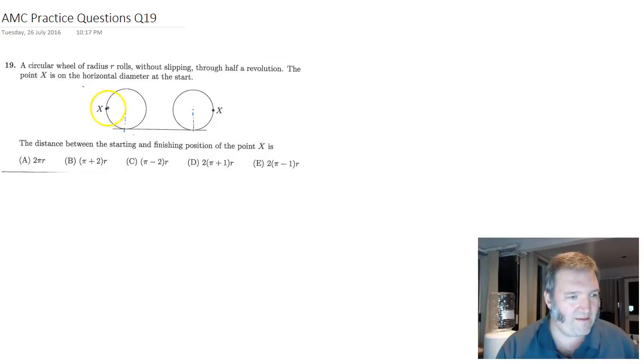Now, as the circle rolls, this point X here is going to go around, hit the top, and it's going to end up over there. What distance does it roll?